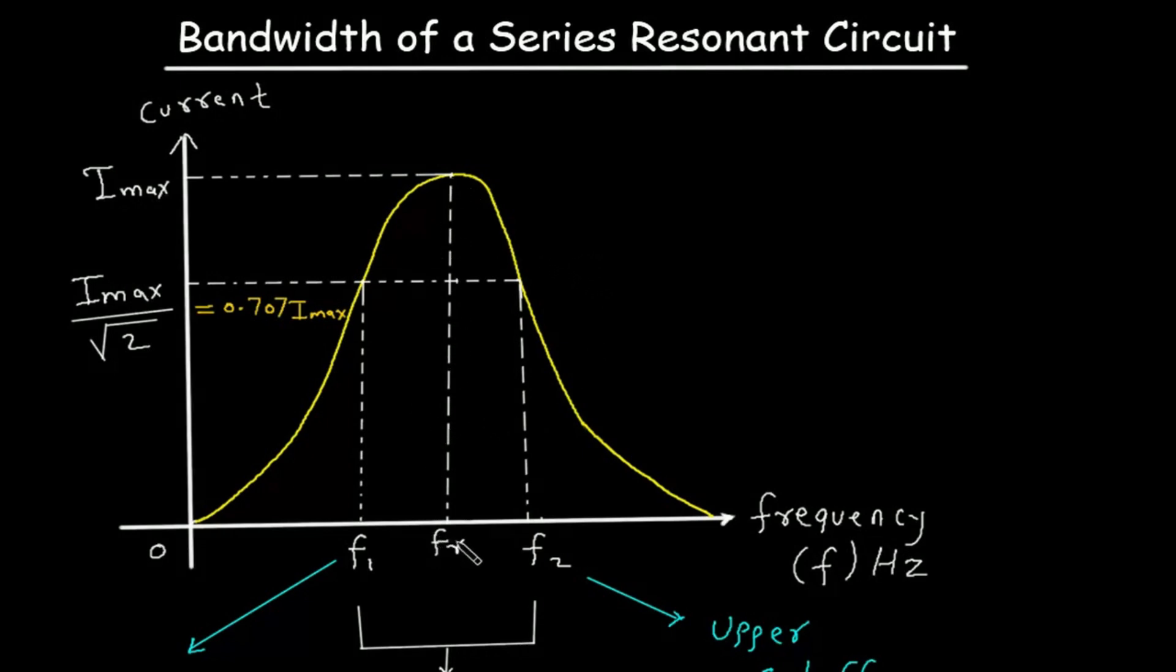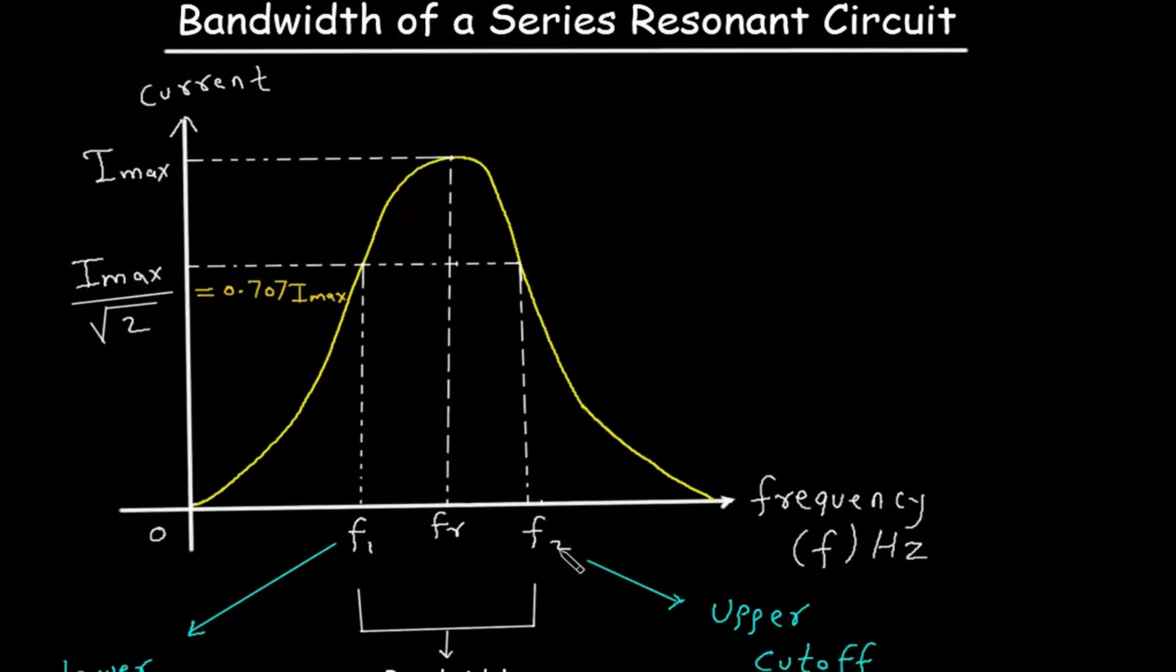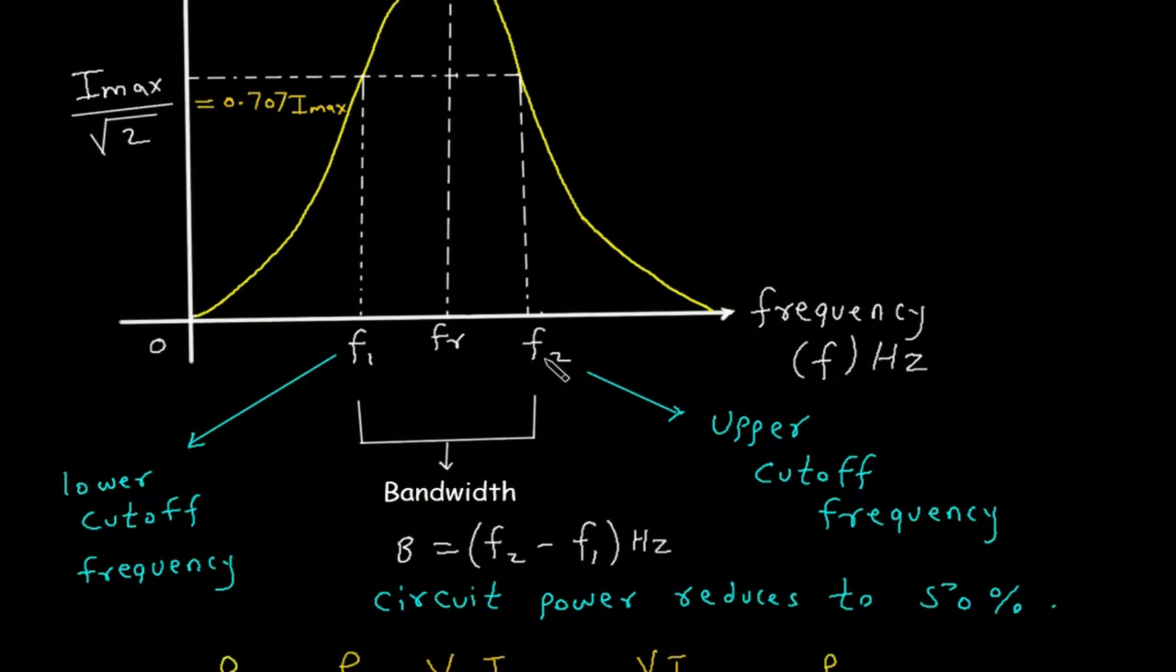At this point, the frequency is the resonance frequency where the current is maximum. If we take Imax divided by root 2, we get this point F1 and this point F2. The difference between F2 and F1 is called the bandwidth.